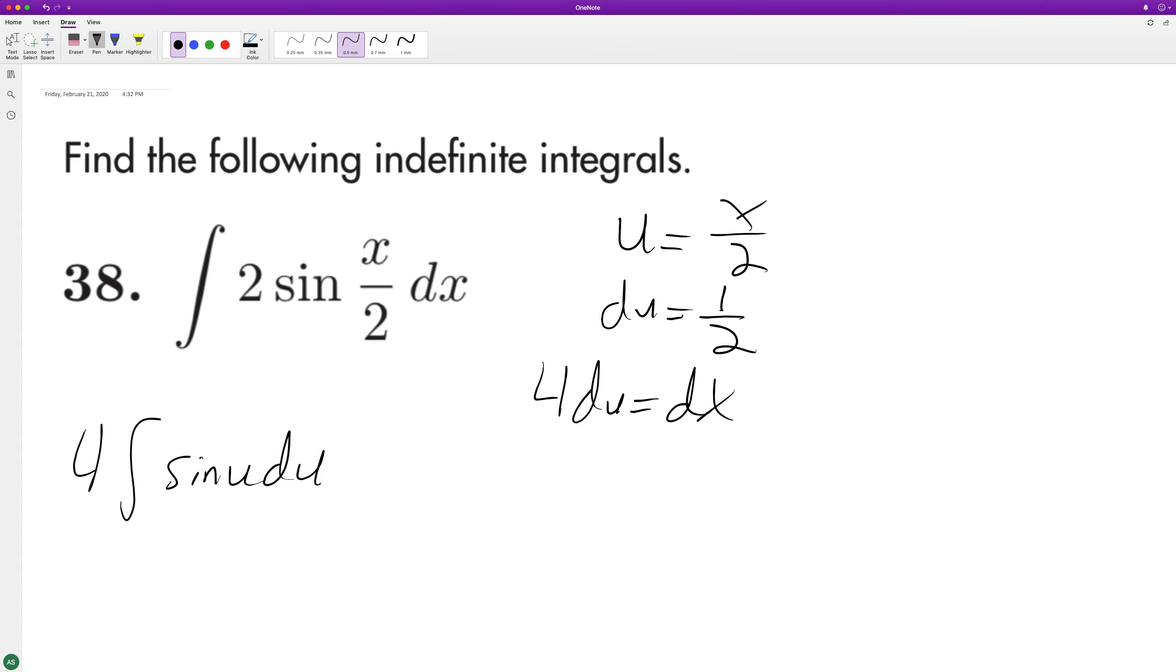The integral of sine is equal to negative cosine u plus c. Substitute back in for u, we end up with negative 4 cosine x over 2 plus c.